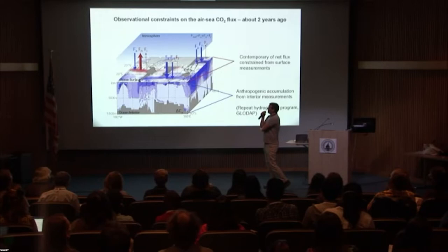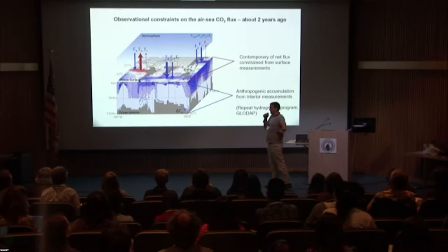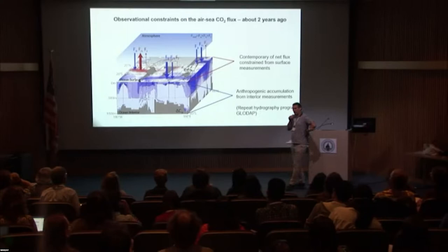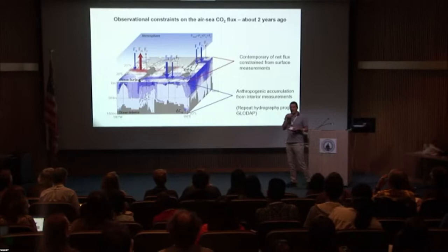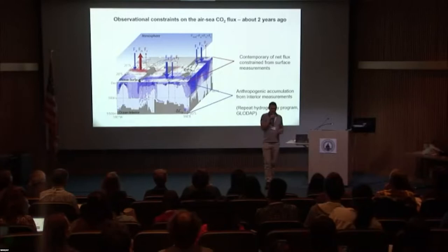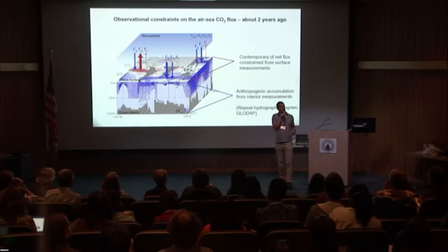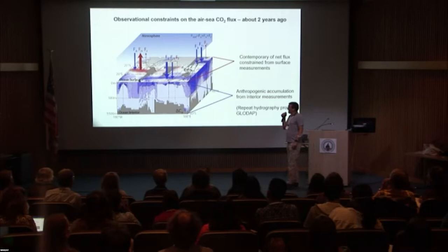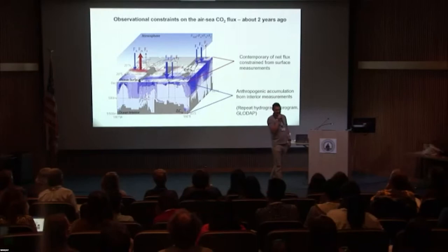When you take these two together, you've got two very independent constraints on the air-sea CO2 flux. Two years ago, people thought: we've got these independent constraints — let's put them together. Do they actually agree with each other? What we found was a frustrating answer: if you want them to agree, yes, you can have them agreeing. But if you don't want them to agree, they don't. The reason is linked to the knowledge gaps we still had.